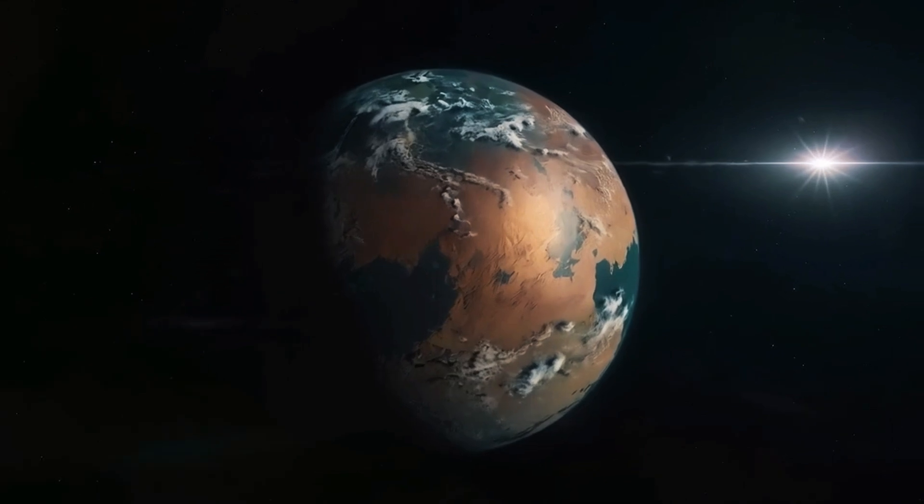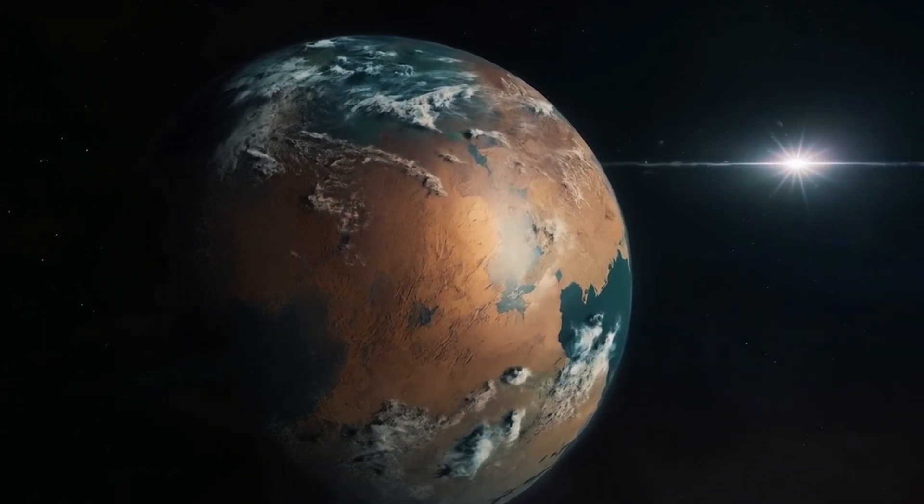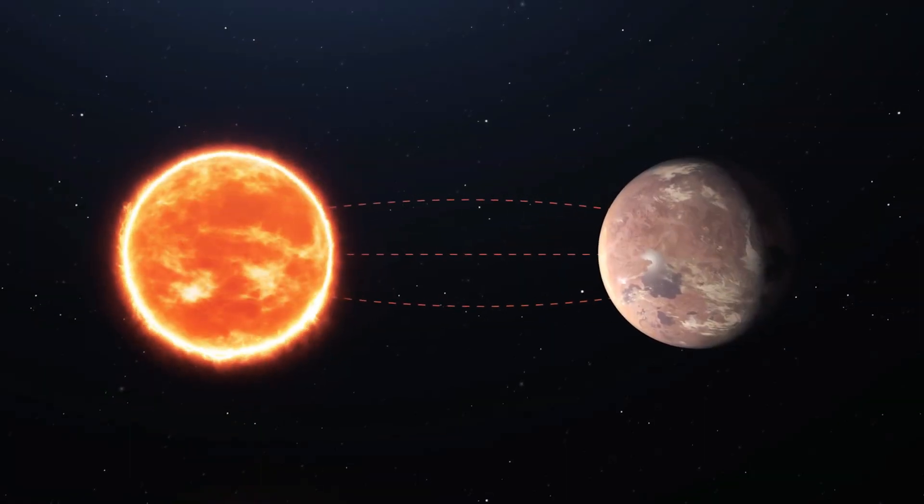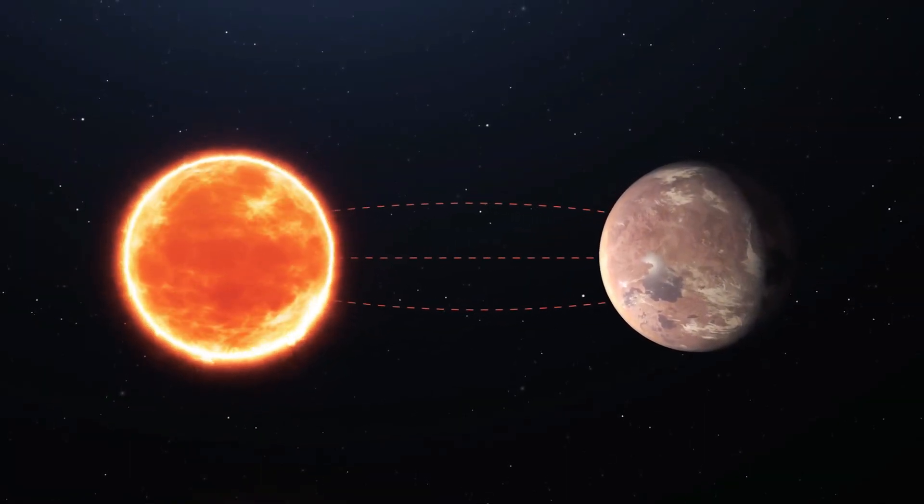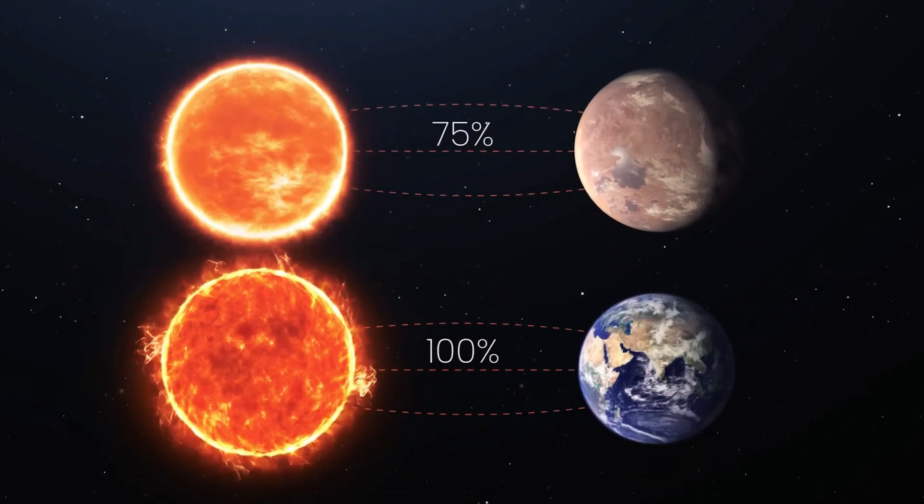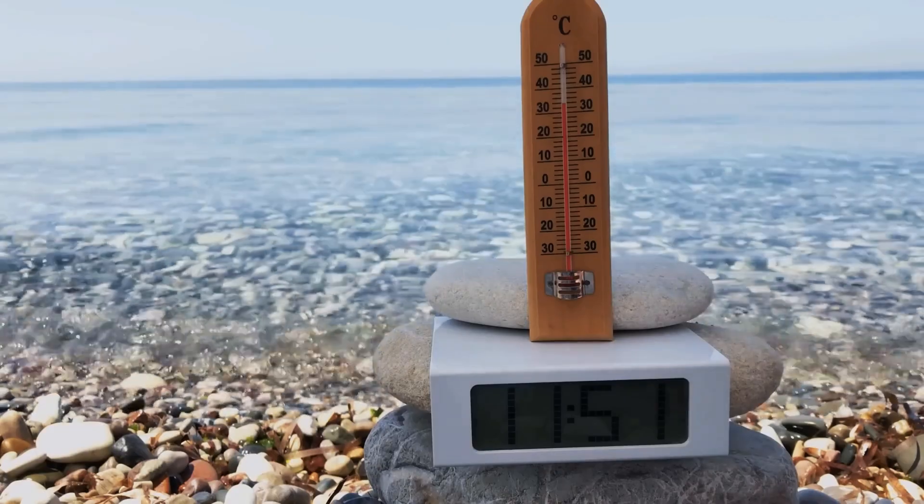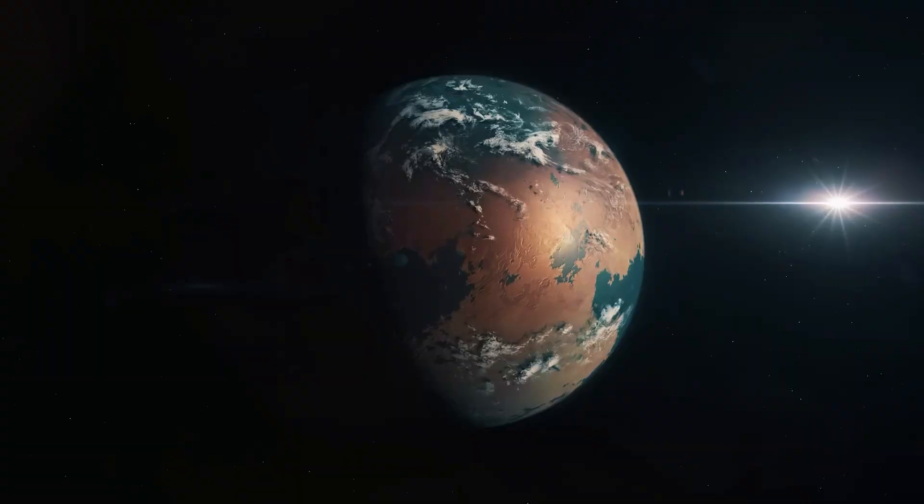This newly revealed world is only 1.06 times larger than our own planet. Also, the amount of starlight it receives from its host star, which is also a red dwarf, is 75% of the amount of light Earth receives from our Sun, meaning the exoplanet's temperature may be similar to our planet's as well.